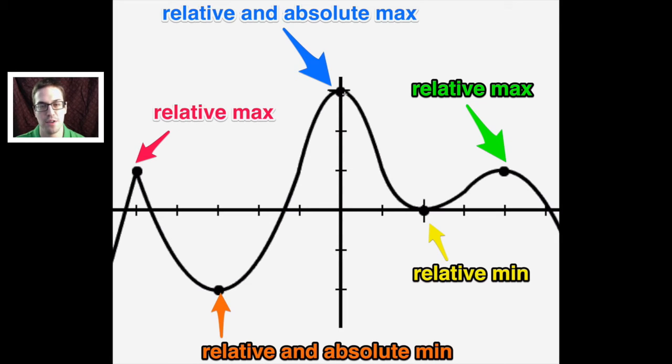So as you can see, based on this interval right here, this is clearly the biggest one. So it's the absolute max, but it's still a relative max as well because it forms a hill. Down here it's relative and absolute min because it forms a valley and it's also the lowest value in this entire interval for that function.